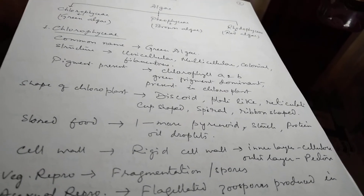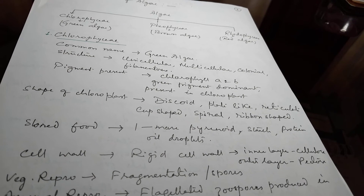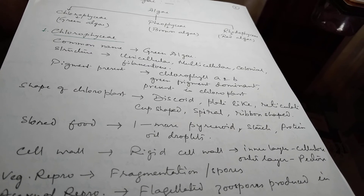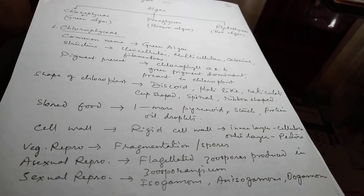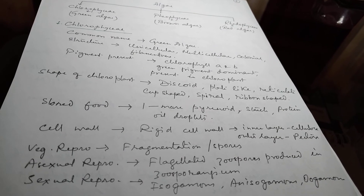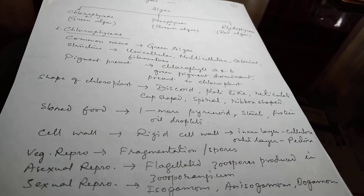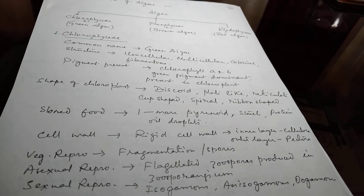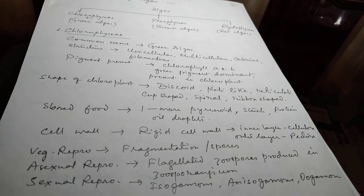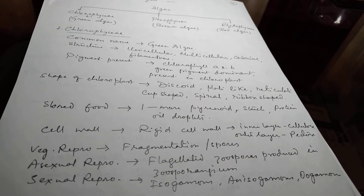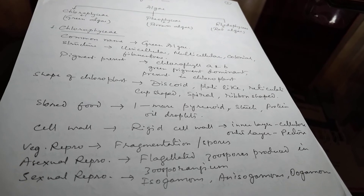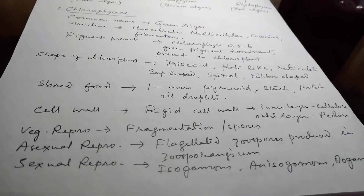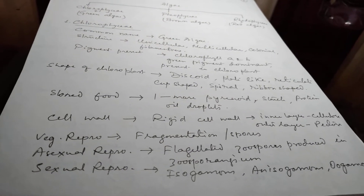Vegetative reproduction: fragmentation and spores. Asexual reproduction flagellated zoospores के through होता है जो zoosporangium में बनते हैं। Sexual reproduction: isogamous, anisogamous, oogamous — यानि तीनों तरह के sexual reproduction इसमें मिलते हैं।